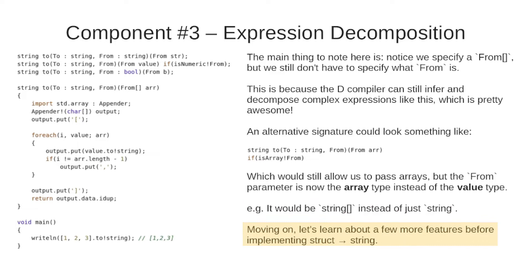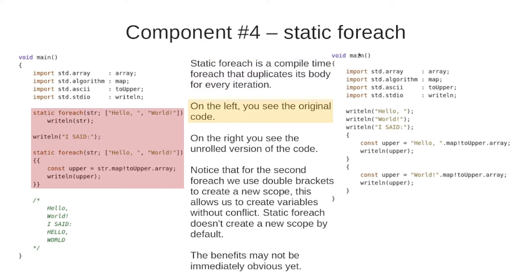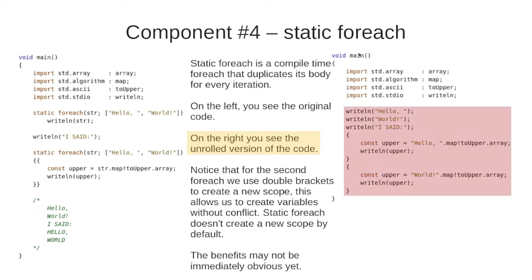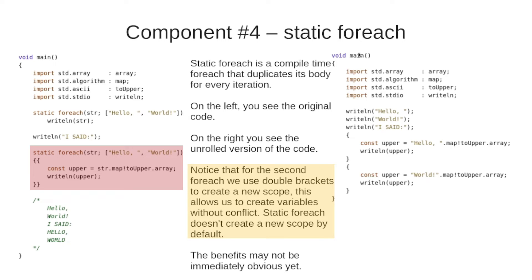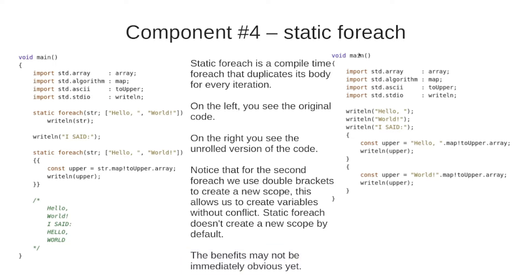Moving on, let's learn about a few more features before implementing struct into string. First up is static foreach, which is a compile-time foreach that duplicates its body for every iteration. On the left you see the original code; on the right you see the unrolled version. For the second foreach we use double brackets to create a new scope, which allows us to create variables without conflict — this is because static foreach does not create a new scope by default. This is very important and the benefits will be quite clear soon.